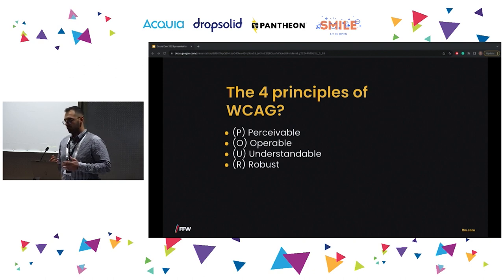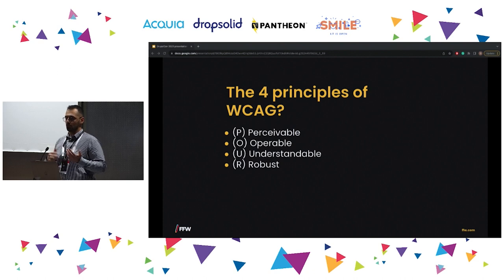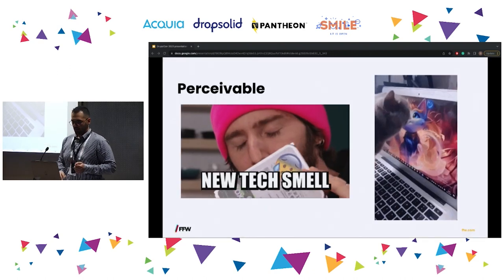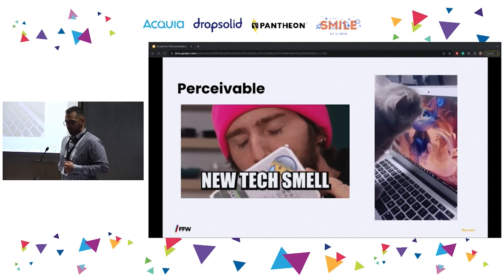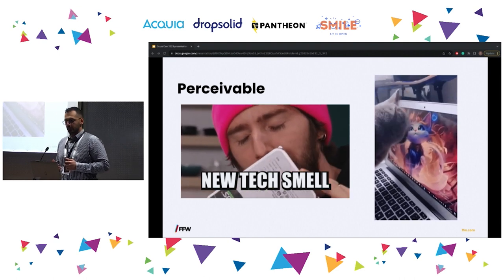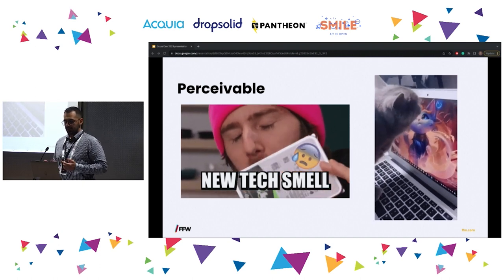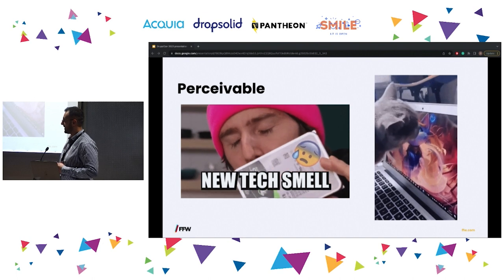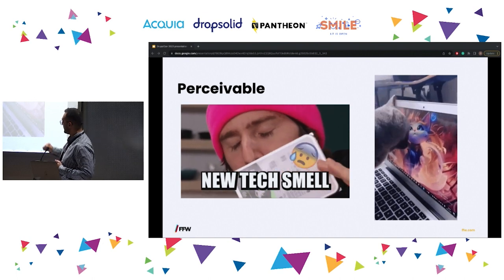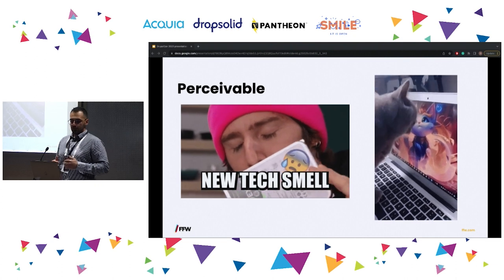We'll go through each of those principles so you'll be able to understand accessibility without memorizing every guideline. First, we have Perceivable. Perceivable stands for the biological way we gather information: sight, sound, smell, taste, and touch. For the sake of web, we skip smelling and tasting and keep the rest.